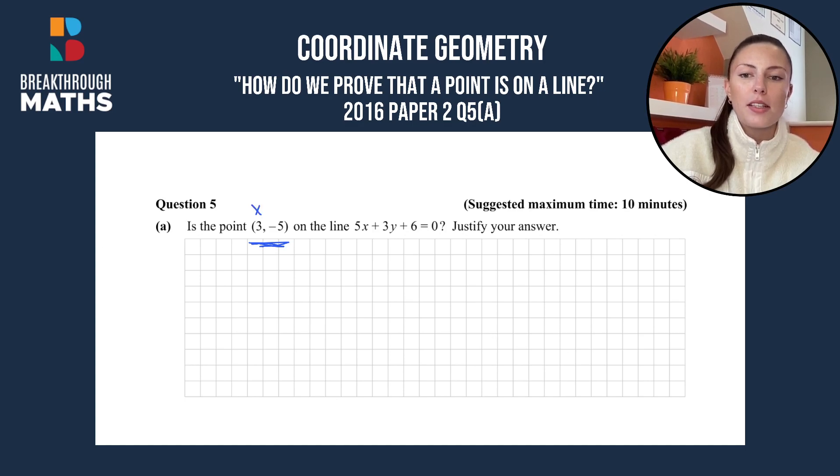So we know our coordinates always have our x first and our y second. So we know x is going to be equal to 3 here and our y value is going to be -5. We've just taken that straight from the coordinates. Now all we have to do is substitute our x and y value into the equation that we're given.